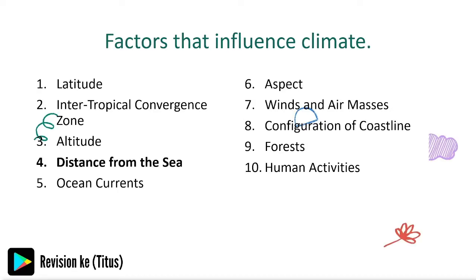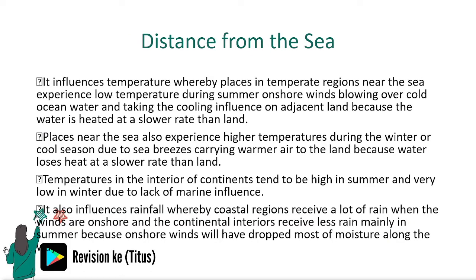Distance from the sea influences temperature. Places in temperate regions near the sea experience low temperatures during summer due to onshore winds blowing over cold ocean water and carrying a cooling influence on adjacent land. Places near the sea also experience higher temperatures during winter due to sea breezes carrying warmer air to the land. Temperatures in the interior of continents tend to be high in summer and very low in winter due to lack of marine influence.